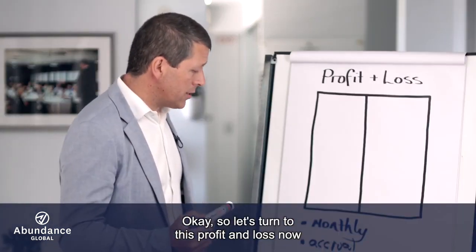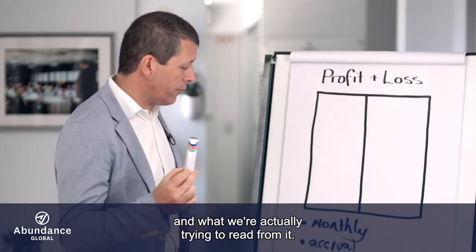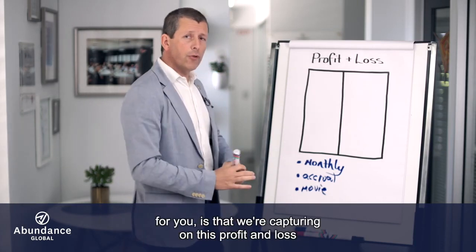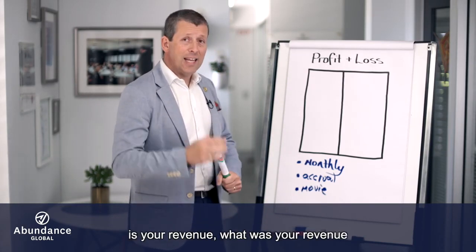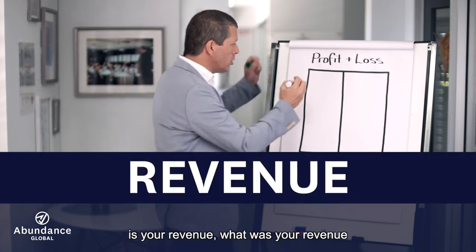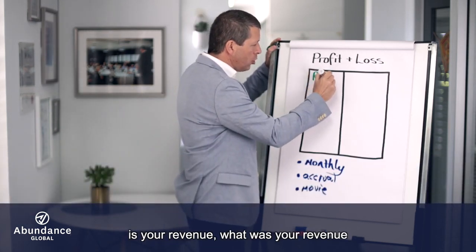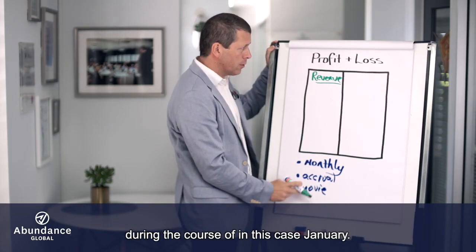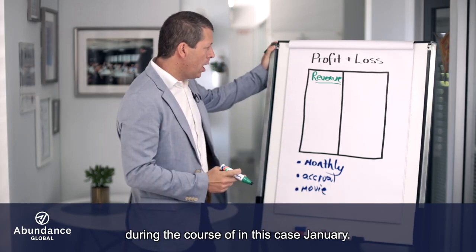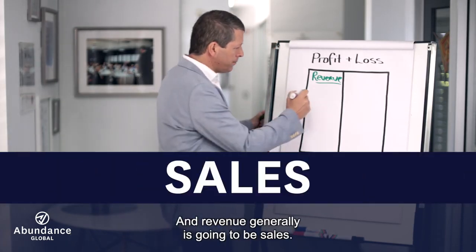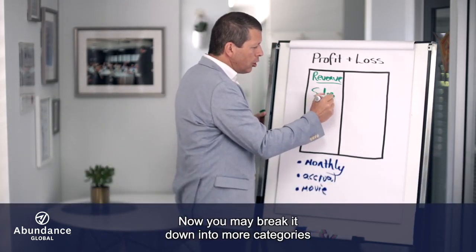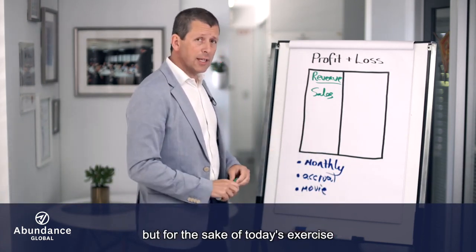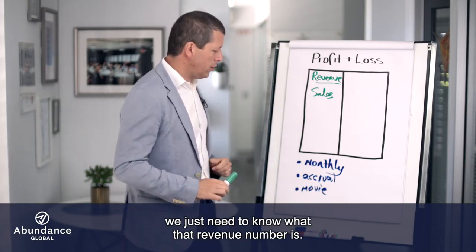Now let's turn to what we're actually trying to read from this profit and loss. The first thing that's going to be at the front of mind, that we're capturing on this profit and loss, is your revenue. What was your revenue during that period of time — during the course of the month, in this case January? Revenue generally is going to be sales. You may break it down into more categories, and we strongly recommend you do, but for today's exercise we just need to know what that revenue number is.